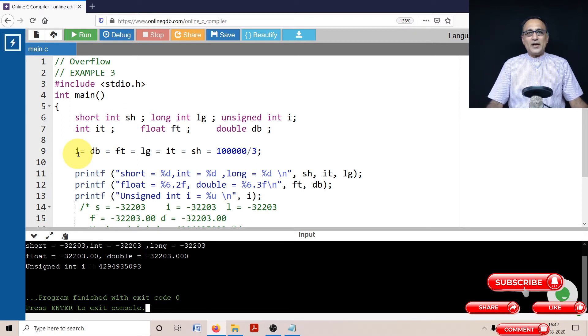Now with unsigned integer value, what happens is there is nothing called a negative number in unsigned integer. Unsigned data type can only have zero or plus. So what it does is it interprets the negative number which is stored as a two's complement as a very huge large number.